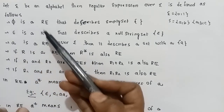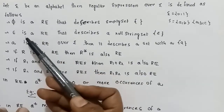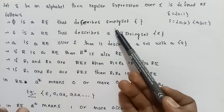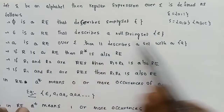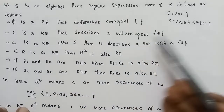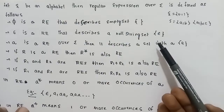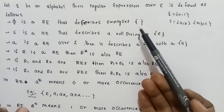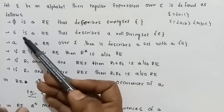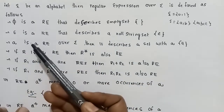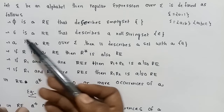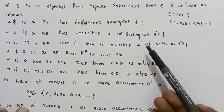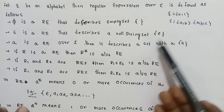The empty set, phi, defines the empty set — there is no string in it. It is a regular expression for phi. Next, epsilon is a regular expression that describes the null string set. The first base case is empty set phi; the next is the null string.